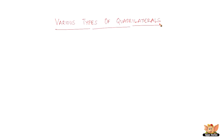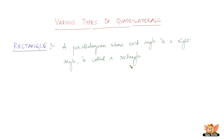Another one in the various types of quadrilaterals is a rectangle. This is the most commonly heard quadrilateral — the four-sided closed figure. But I am sure the definition is not the way we would define it. The definition goes like this: a parallelogram whose each angle is a right angle is called a rectangle.